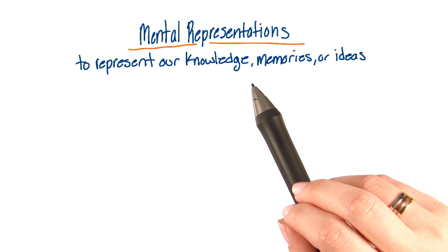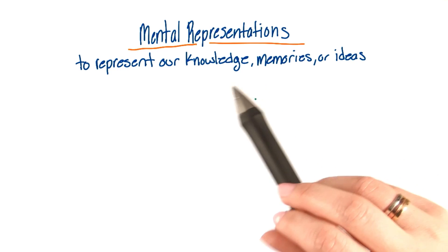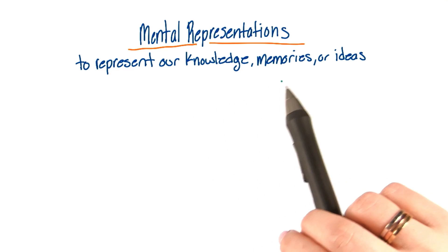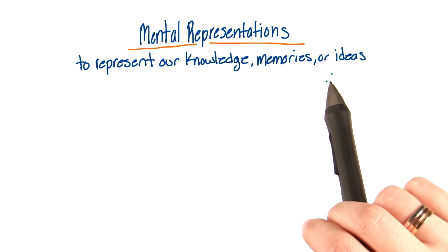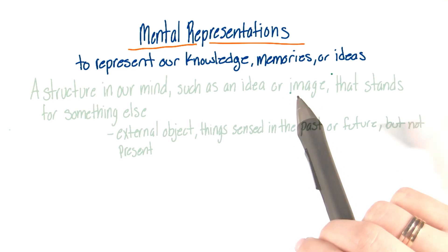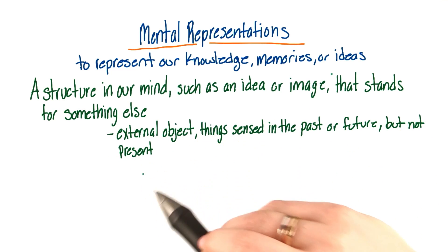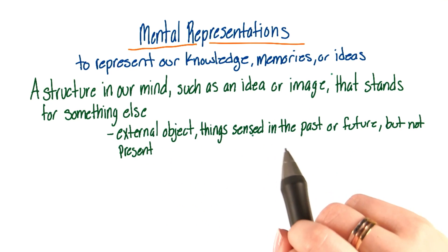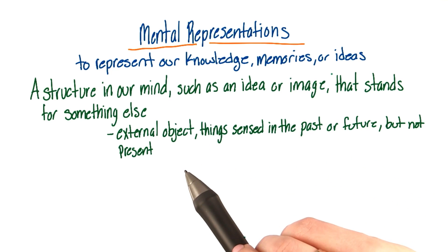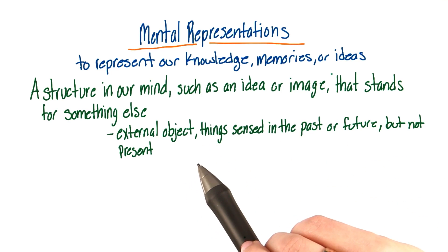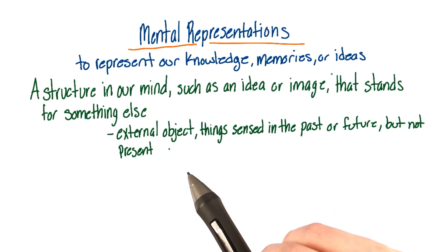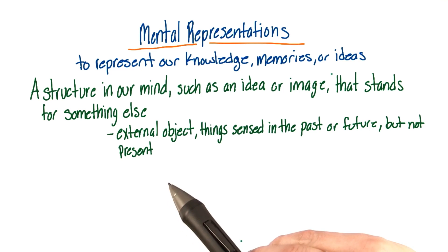Cognitive psychologists suggest that we use mental representations to represent our knowledge, memories, or ideas in order to store and maintain our mental processes. Mental representation is defined as a structure in our mind, such as an idea or image, that stands for something else, such as an external object or things that we sense in our past or future. But whatever it is, it's not something in the present.